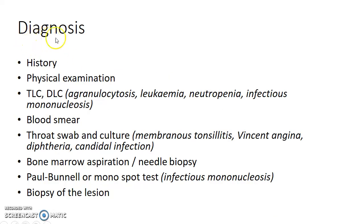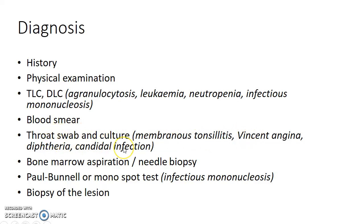Now, how do you diagnose a case with membrane over tonsil? A thorough history should be taken and physical examination should be done. Total leukocyte count and differential leukocyte count can be done to diagnose agranulocytosis, leukemia, neutropenia, and infectious mononucleosis. Blood smear can reveal atypical cells in infectious mononucleosis. Throat swab and culture can reveal membranous tonsillitis, Vincent angina, diphtheria, and candidal infection. Bone marrow aspiration or needle biopsy can also be done. Paul-Bunnell test or monospot test can be done to diagnose infectious mononucleosis.